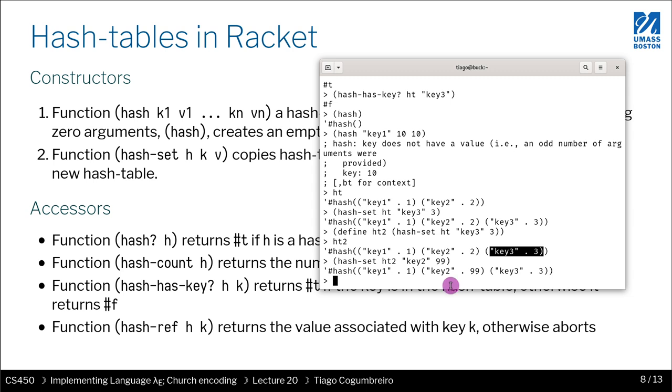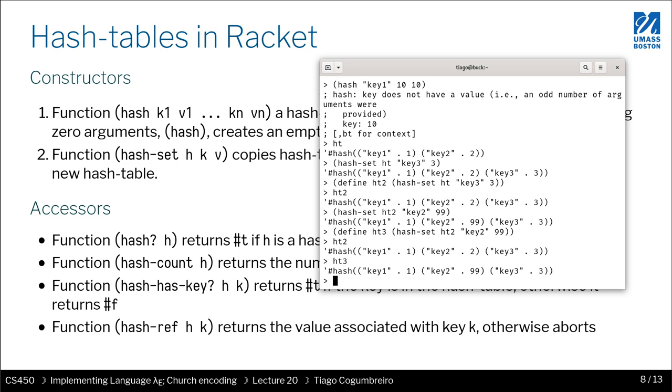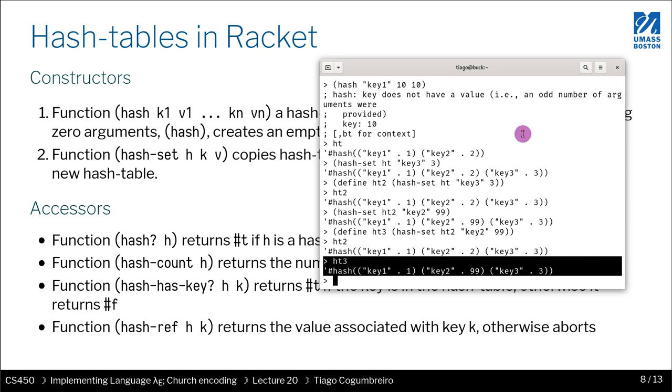Note that before you had this, where key two was assigned to two, and now key two is assigned to 99. Do note that you have to, that the hash table that contains 99 is the one that is returned by hash-set. So you need to store it somewhere. So you need to have hash three, so ht2 remains unchanged, and ht3 has the effect of the change here. As you can see here, this is very important, because as you know, we are using no mutability. So whenever we want to change something, we need to create a new object or a new value. And that's exactly what's happening here. When you call hash-set, that creates a new hash table.